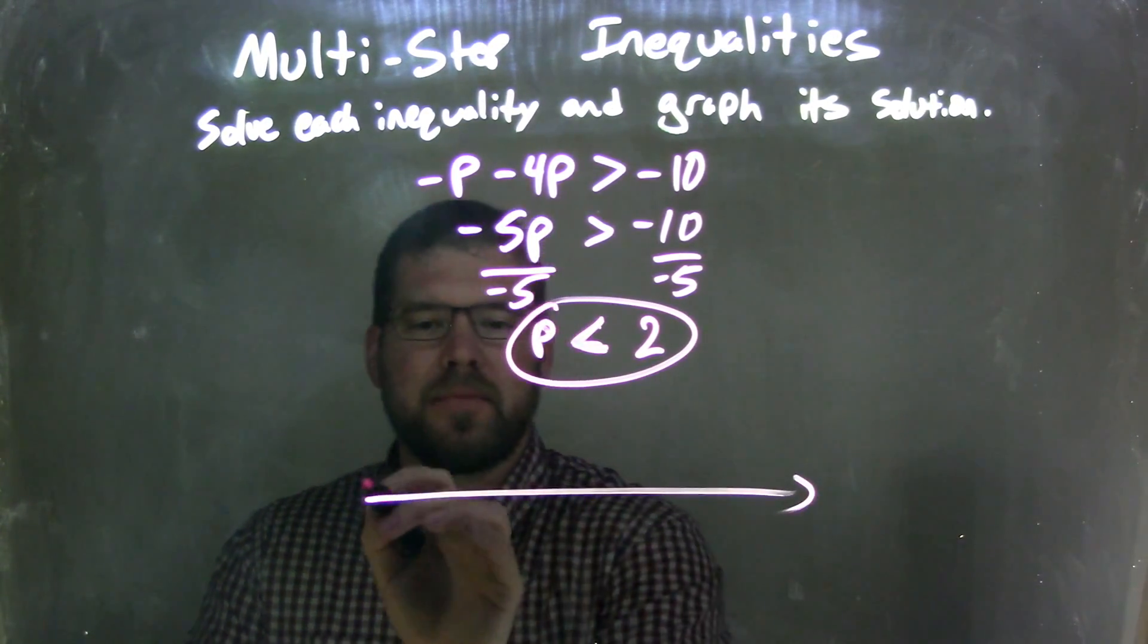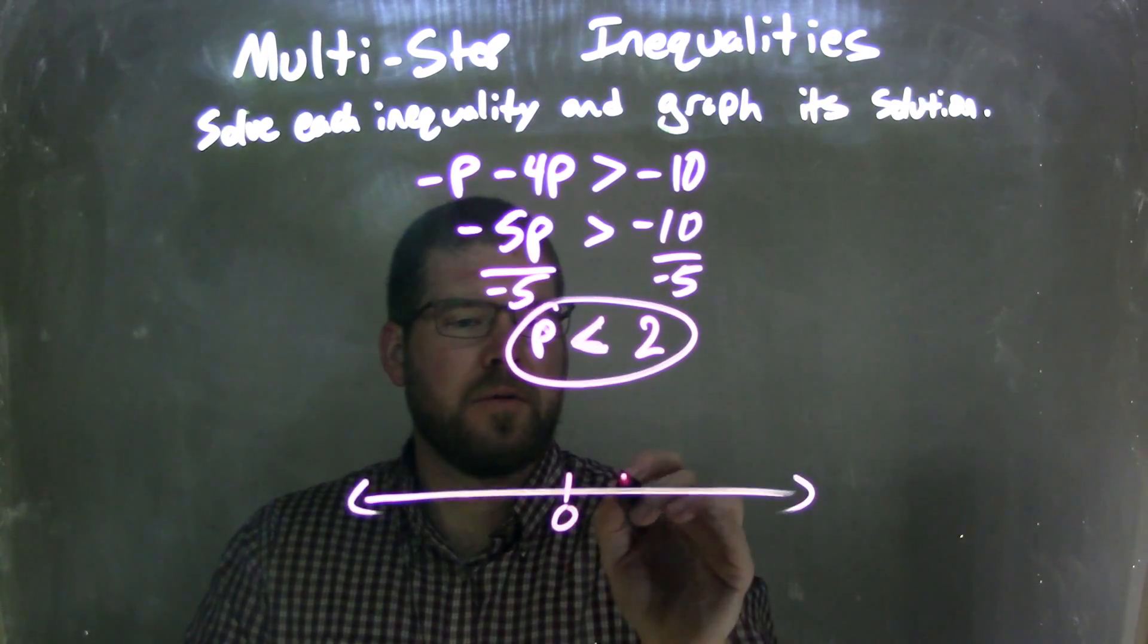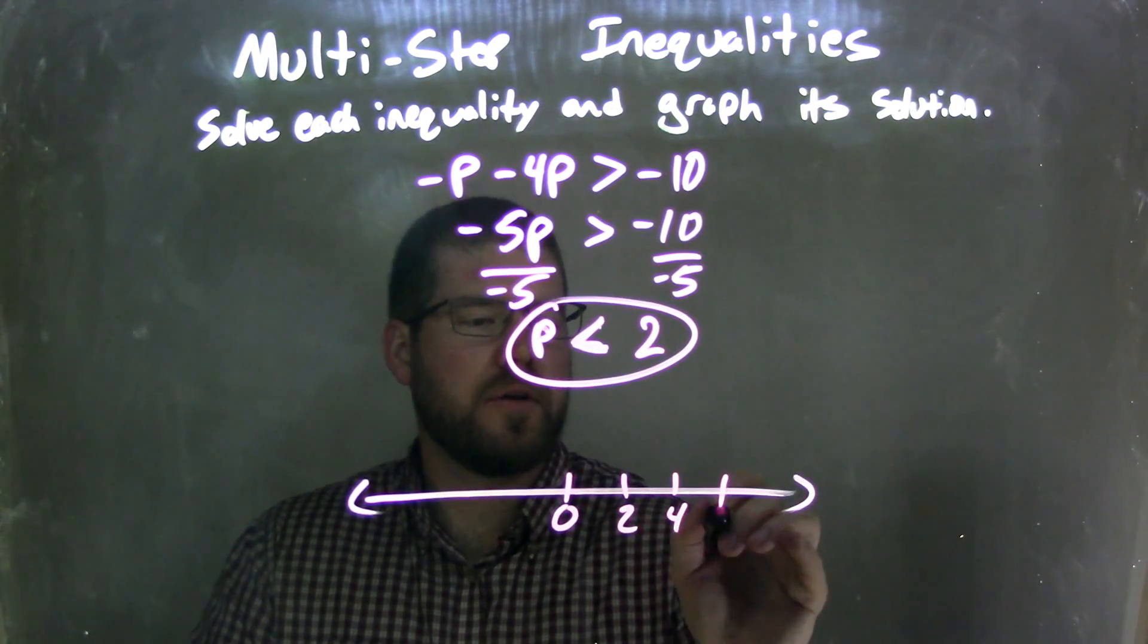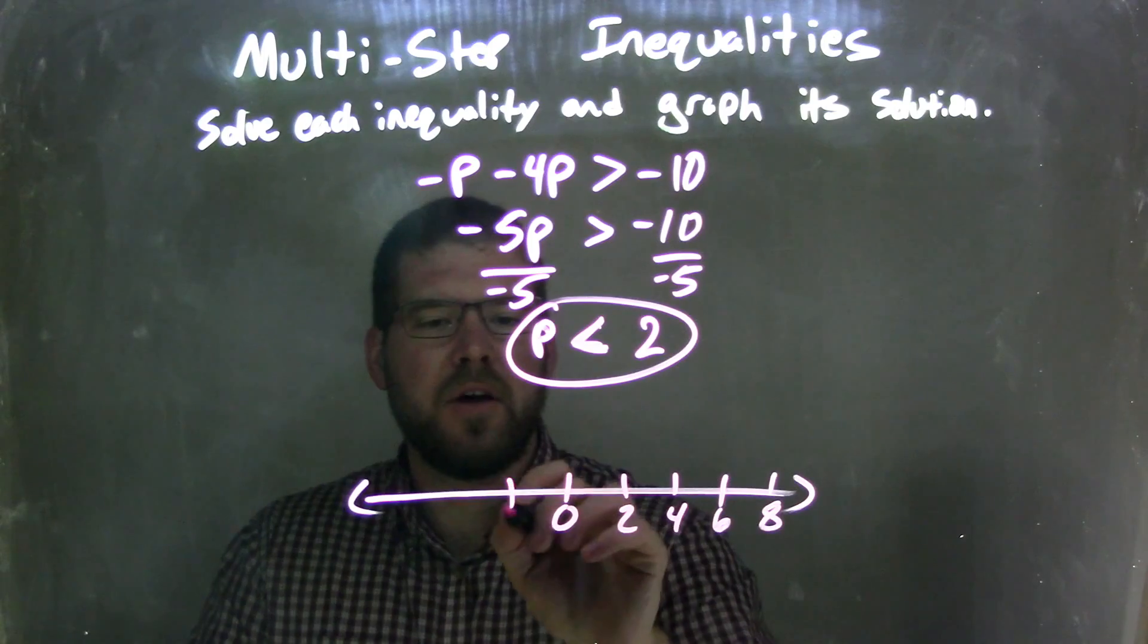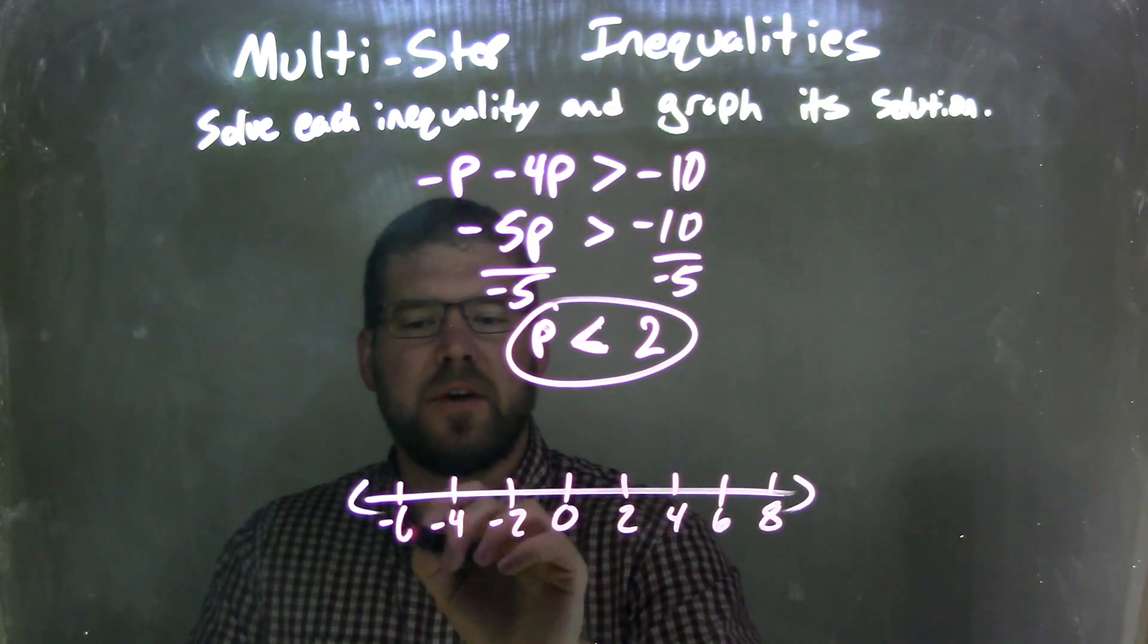So now let's make a graph. Zero, let's go by twos: 2, 4, 6, 8, and negative 2, negative 4, negative 6.